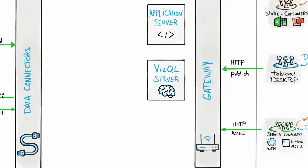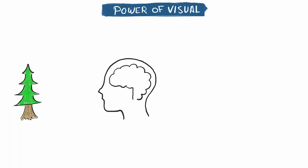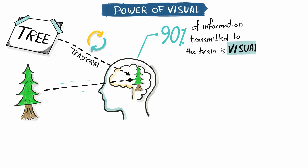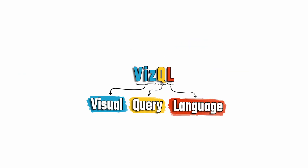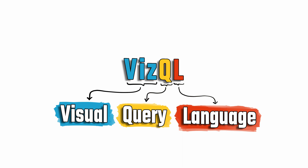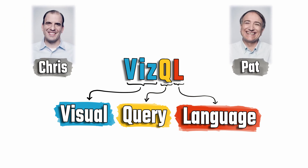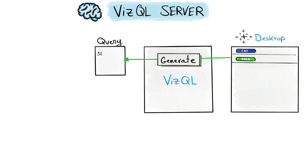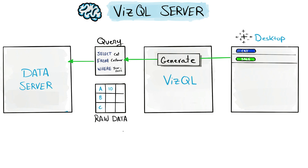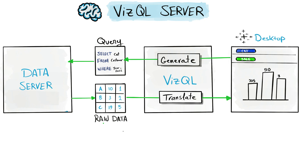The next server is the VizQL Server. VizQL is like our brain — it does the magic by converting numbers and text into visuals and images. VizQL stands for Visual Query Language for databases, invented by Tableau's founders Chris and Pat. When you drag and drop something in Tableau, VizQL converts that action into an SQL query and sends it to the Data Server to get the data. The Data Server sends the results back as raw data, and VizQL converts that raw data into visuals presented to the client.